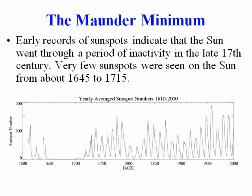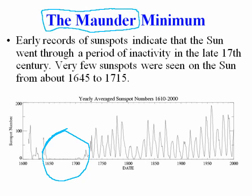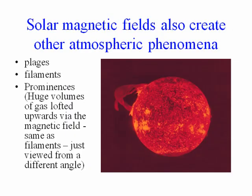There was a time, however — many years in the 17th and early 18th century — where the Sun had very few spots on it. This appears to be a period of inactivity in the Sun where very few sunspots were seen, and today this is referred to as the Maunder Minimum, named for the individual who first studied this phenomenon. Sunspots, activity in the chromosphere, and activity in the photosphere are caused by magnetism.